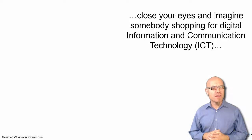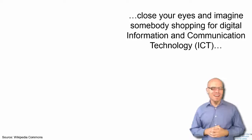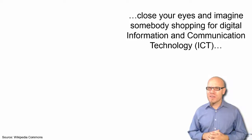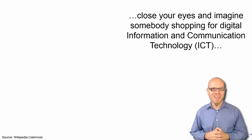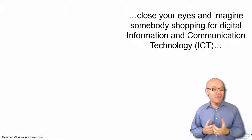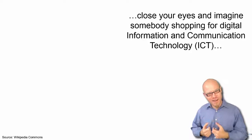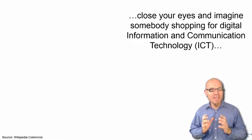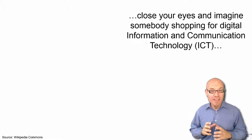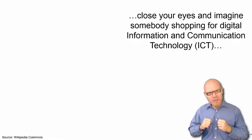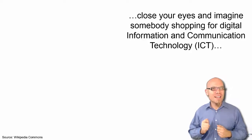Now imagine a poor person shopping for ICT. You can open your eyes again. How many of you imagined a poor person the first time already? If you're like most people, you imagined somebody very similar to you or your friends during the first exercise, and only during the second exercise imagined somebody living in poverty. This is completely normal — our default outlook on the world is that the entire world is kind of like us. And we have to train ourselves to gain different perspectives on the world.